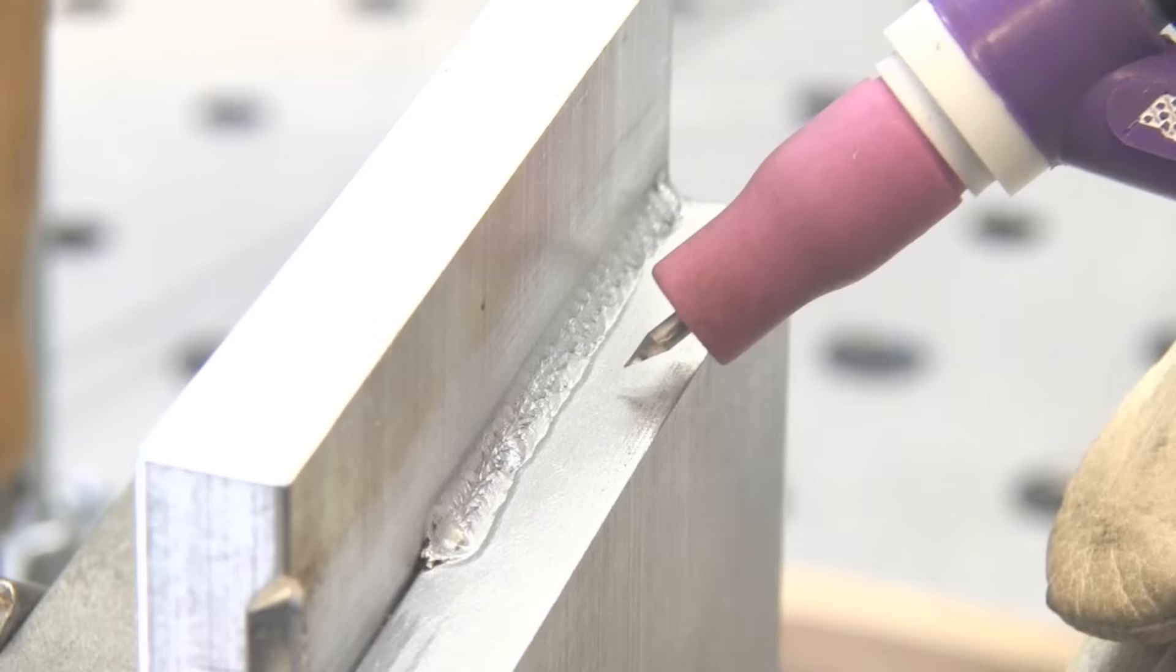Once you get the puddle joined together, though, things don't look the same, but they go along pretty well. And you're just moving along at a pretty good clip, really, really tight arc, and kind of like stabbing the wire into the puddle, not giving it a chance to ball up and oxidize.